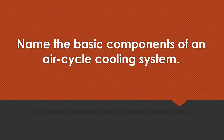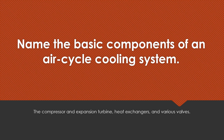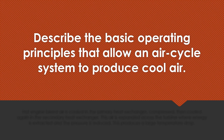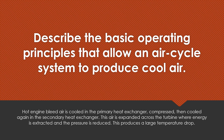Name the basic components of an air cycle cooling system. The compressor and expansion turbine, heat exchangers, and various valves. Describe the basic operating principles that allow an air cycle system to produce cool air. Hot engine bleed air is cooled in the primary heat exchanger, compressed, and then cooled again in the secondary heat exchanger. This air is expanded across the turbine where energy is extracted and the pressure is reduced, producing a large temperature drop.